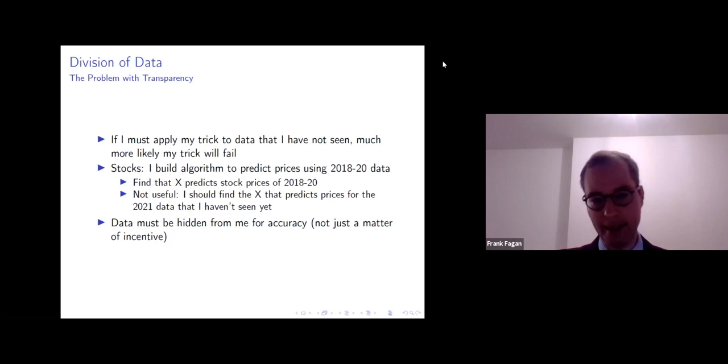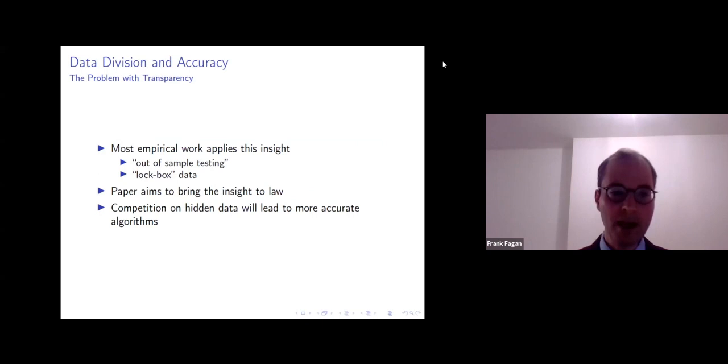So most empirical work quite naturally applies this insight. So out-of-sample testing, even the Kleinberg paper that I mentioned before, is always applied. It's very careful to set aside data in the lockbox for diagnostic testing. And for some reason, this insight of dividing data and keeping some of it hidden from the algorithm builders, this insight hasn't made it into law or perhaps law and economics more particularly. And we're trying to bring that insight to bear. And so the idea, of course, is that competition on this hidden data will lead to more accurate algorithms.